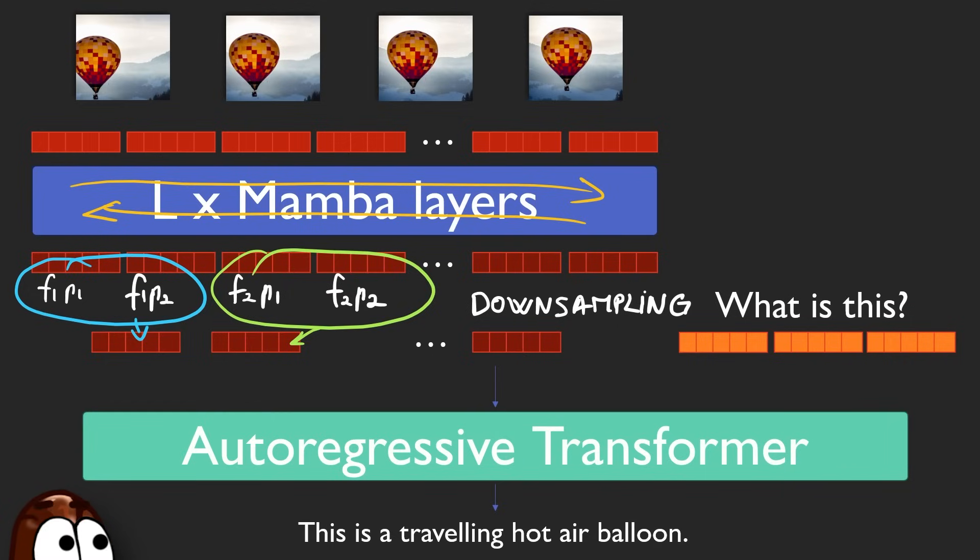All of the remaining video vectors after downsampling get sent to the Qwen-2-VL language model, which has been pre-trained on text data and image caption data.